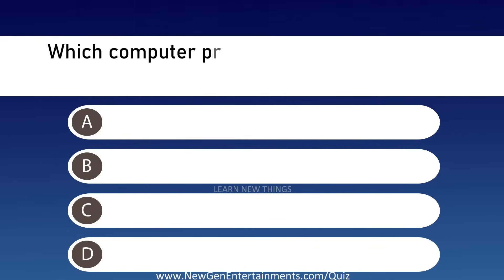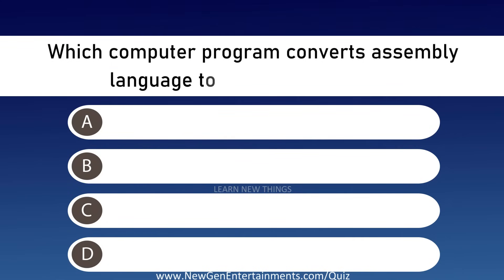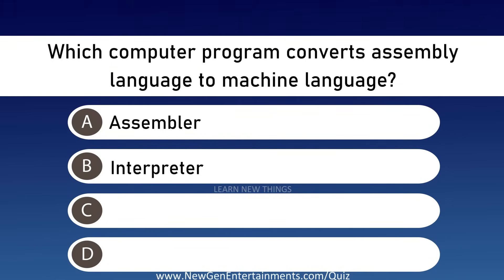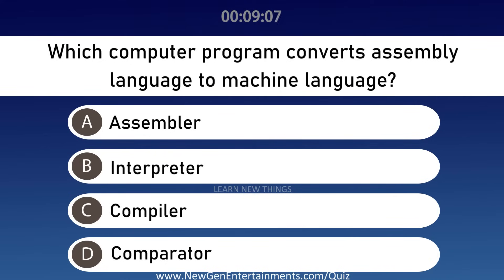Which computer program converts assembly language to machine language? Options are A: Assembler, B: Interpreter, C: Compiler, and D: Comparator. Answer is Option A, Assembler.